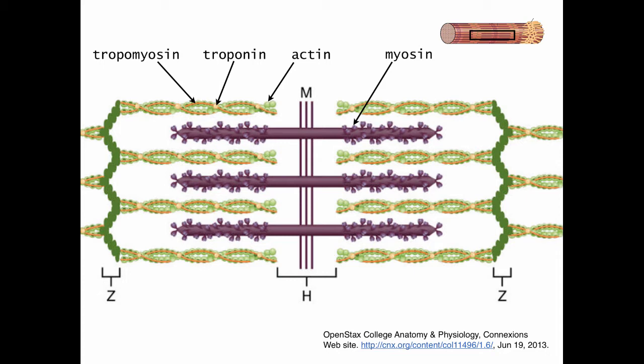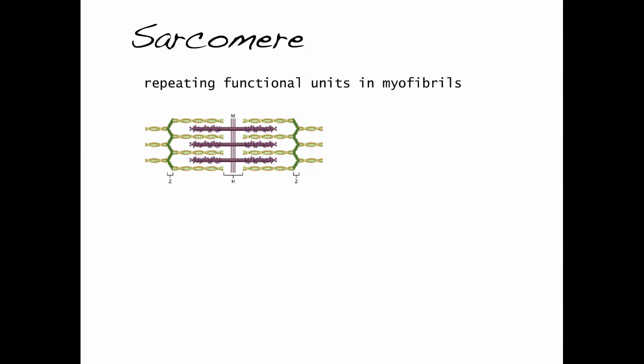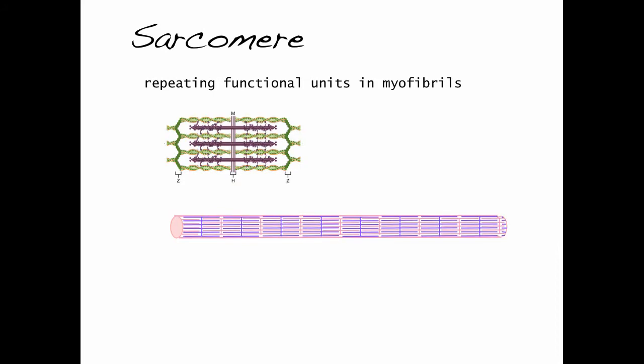When the sarcomere shortens, the thin filament slides over the thick filament. Now, as you'll recall, the sarcomere is the repeating functional unit in myofibrils, so that if you have a series of sarcomeres beside one another, they form the entire length of the myofibril, and if the sarcomeres shorten, the myofibril will shorten, and therefore the muscle will be shortened.